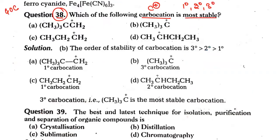The question asks which carbocation is most stable. Looking at the first compound, option A: it looks like three alkyl groups, but the carbon bearing the positive charge has only one alkyl group directly attached, so this is primary, not tertiary. For option B, the carbon bearing the positive charge directly has three alkyl groups, so this will be tertiary carbocation.